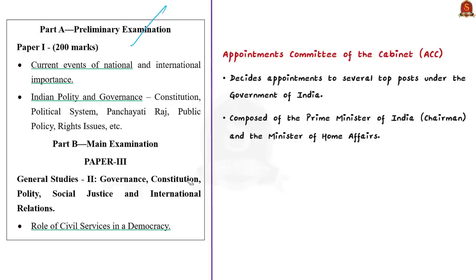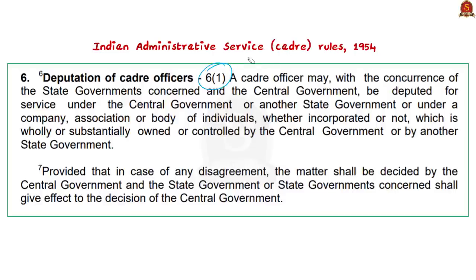The Appointments Committee of the Cabinet decides upon appointments to several top posts under the Government of India. The committee is composed of the Prime Minister of India, who is also chairman, and the Minister of Home Affairs. This committee, through the Department of Personnel and Training under the Ministry of Personnel, ordered the Chief Secretary of West Bengal to report to New Delhi. This was an unprecedented move, done by invoking Rule 6 Clause 1 of the Indian Administrative Service Cadre Rules of 1954.